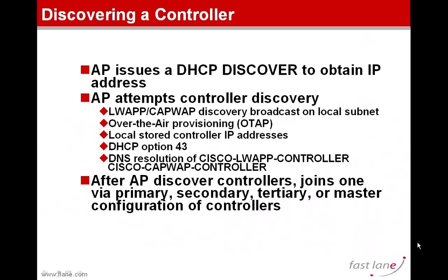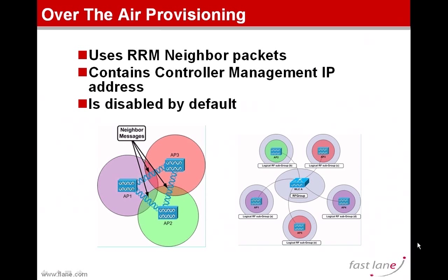So what is it and how does it actually work? It relies on a packet which is called RRMNeighborPacket. This packet is sent by all access points as soon as they are connected to a controller. The primary feature of the RRMNeighborPacket is not mainly to discover controllers through OTAP — actually, by default OTAP is disabled, which means that the RRMNeighborPacket does not contain any OTAP information.